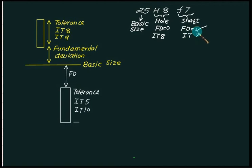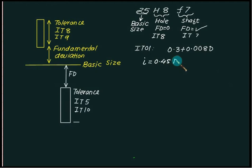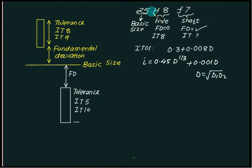Now how do you calculate this? The data is provided directly to you, or you can calculate it. In rough calculation, you can take IT01 as 0.3 plus 0.008 times D. D is taken as the square root of D1 times D2. Normally the standard step sizes are available. The i value can be calculated as 0.45 times D to the power 1/3, that is the cube root of D, plus 0.001 times D. For basic size 25, you select two close standard values D1 and D2.